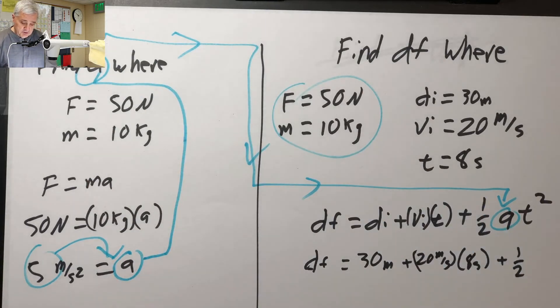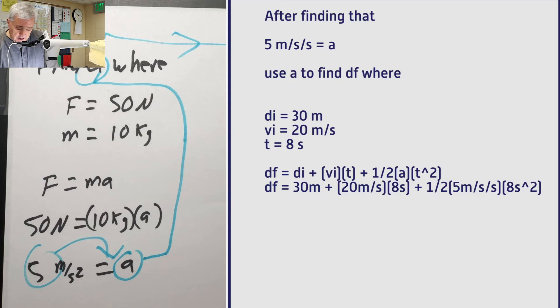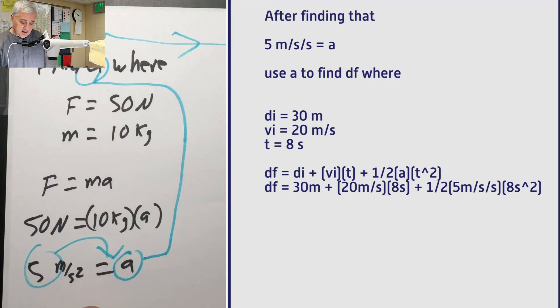So 5 is a, a follows it over. So 5 is going to be my a. 1 half, 5 meters per second squared times 8 seconds squared. Ran out of room, as I often do.